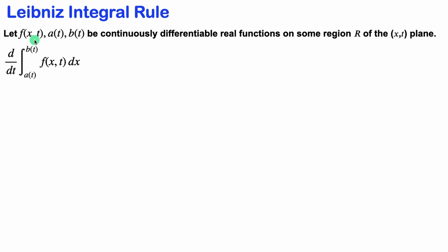We're going to start with our function and assume that it's continuously differentiable, the same as the limits, on some region R of the XT plane. The limits can be functions, but they can also be constant as well. When we take the derivative, notice that these are normal derivative d's — single variable d's, not partial symbols. That's because after we integrate, the x is going to be gone, and the integral of f is going to be a function of t only. So this is like a single variable derivative.